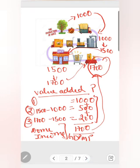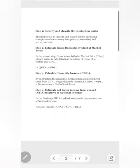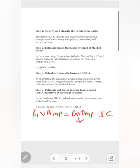Now, how do we find out this value added? Gross value added at market price is equal to gross value of output at market price minus intermediate consumption. The gross value of output at market price is equal to sales plus change in stock — that is, the value of output produced by a firm which could be either sold or kept as stock.